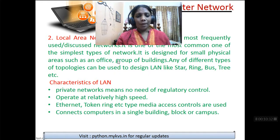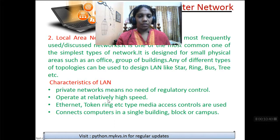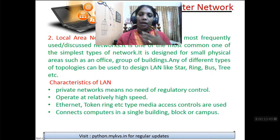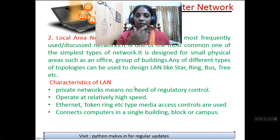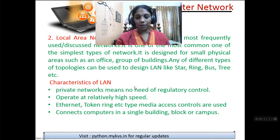Characteristics of LAN: First, it is a private network — meaning no need for regulatory or government approval to operate it. Second, it operates at relatively high speed. Third, communication is done using coaxial cable — in our lab it is coaxial cable — and also Wi-Fi wireless connection. So the characteristics are: no government approval needed, works at relatively high speed, and uses coaxial cable or wireless media to connect computers in a single building, block, or group of buildings.